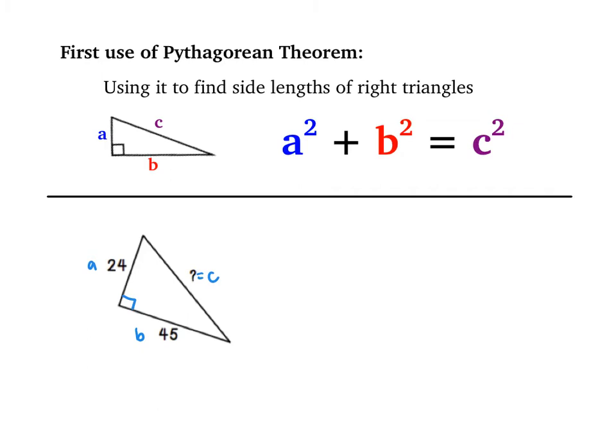To set it up, I'm going to follow a squared plus b squared equals c squared, and plug in the values that I know. I would have 24 squared plus 45 squared equals c squared. 24 squared is 576, 45 squared is 2025.